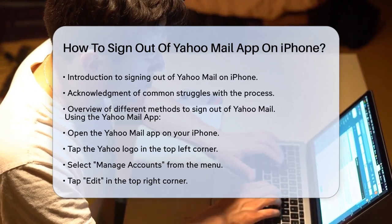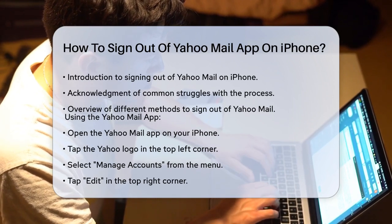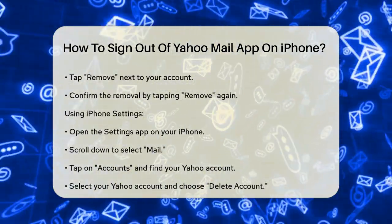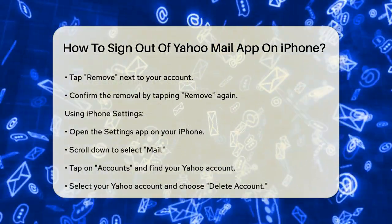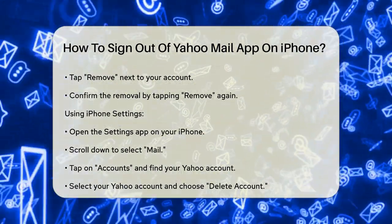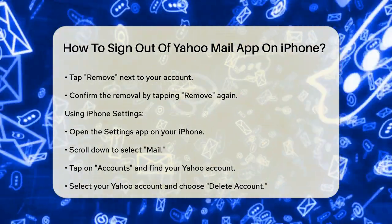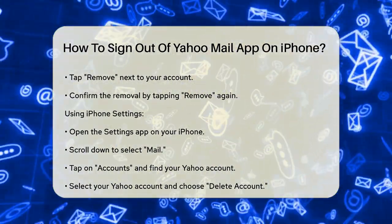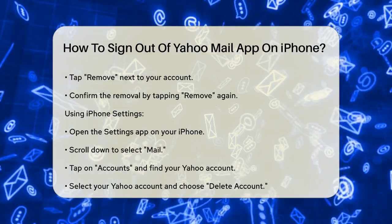Tap Edit in the top right corner. You'll see your account listed — tap Remove on the right side of your account. You'll be prompted to confirm by tapping Remove again in the middle of the screen. This process might seem a bit confusing because the Yahoo Mail app doesn't have a straightforward sign out option, but this is essentially how you log out without deleting your account.